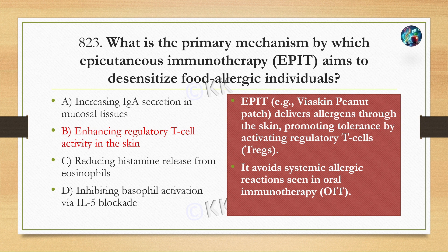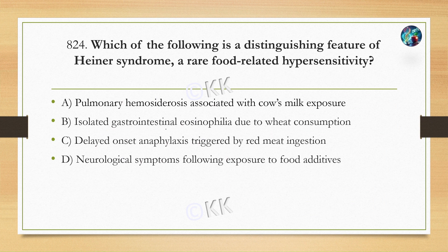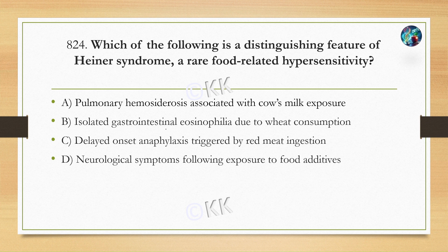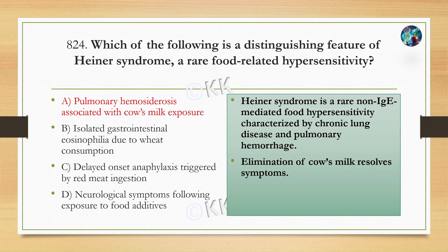Next question: which of the following is a distinguishing feature of Heiner's syndrome, a rare food-related hypersensitivity? Option A: pulmonary hemosiderosis associated with cow's milk exposure. Option B: isolated gastrointestinal eosinophilia due to wheat consumption. Option C: delayed onset anaphylaxis triggered by red meat ingestion. Option D: neurological symptoms following exposure to food additives. The correct option is A — pulmonary hemosiderosis associated with cow's milk exposure.